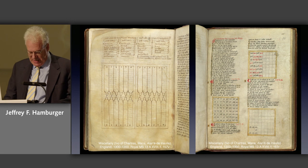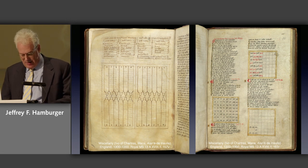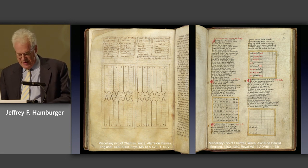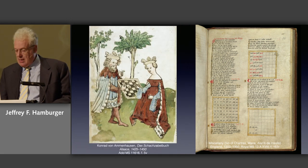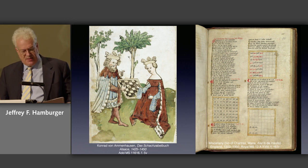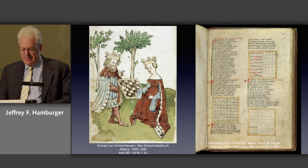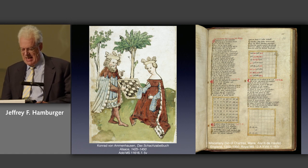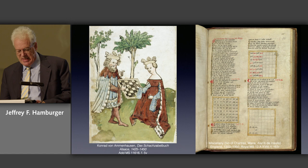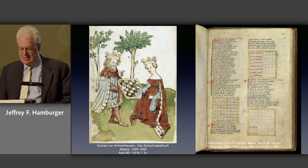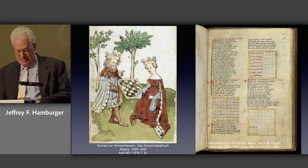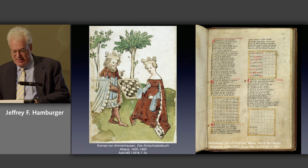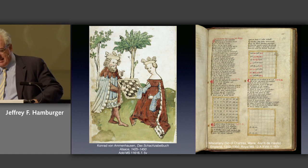Hard on the heels of the treatise on backgammon comes another on chess, in Anglo-Norman verse. It too is accompanied by diagrams. Like chess, backgammon was considered a royal pastime. In this 15th century Alsatian manuscript, a copy of Konrad von Ammenhausen's chess book — a translation of a Latin work by Jacobus de Cesolis — different activities exemplify different ranks and classes of society, as does the game of chess itself, with the king at its head.